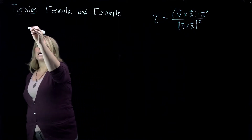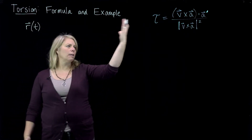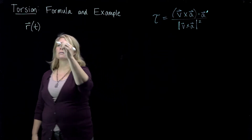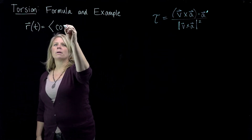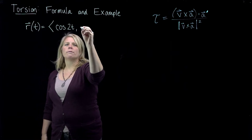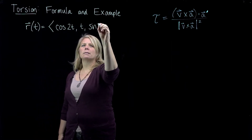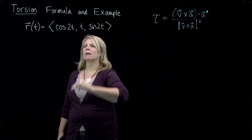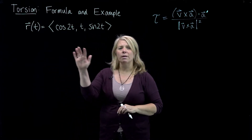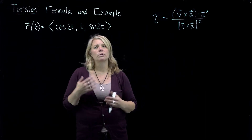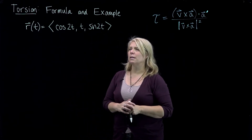We're going to look at a specific example. I chose one that would be fairly easy to calculate, so we can practice the formula and it's interesting to look at on the computer. The curve is given by cosine of 2t, t, and sine of 2t. This is not an arc length parameterization, but at this point you should be able to describe this curve pretty easily without much calculation.